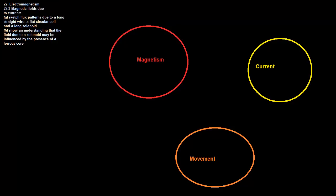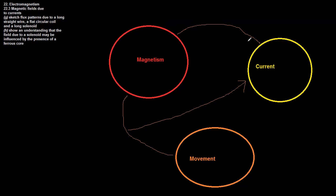Now we're going to look at chapter 22.3, which is magnetic fields due to currents. I put back this image from before - any two of these will cause the other one. If you have a movement of a wire in a magnetic field it will cause a current. If you have a current inside a magnetic field it will cause movement. 22.1 was about how the whole wire will move, and 22.2 was about how a single charge will move.